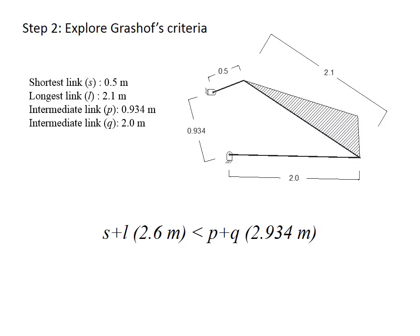Based on Grashof's criteria for this situation, at least one link can have a full 360-degree rotation — this is called the crank. Since the shortest link is on the side of this mechanism at 0.5 meters, we can say this is a crank-rocker mechanism. In a crank-rocker, the shortest link is the crank with full rotation, and the other side link of 2.0 meters has a rocking motion. So in this mechanism, this link is the crank and this is the rocker.